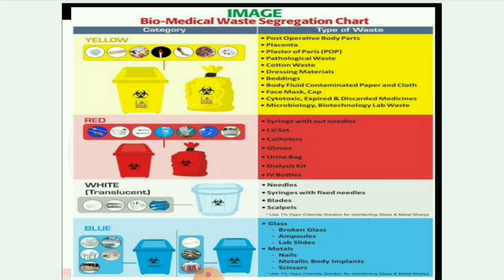Next image is the biomedical waste segregation chart with four categories: yellow, red, white, and blue. In the yellow category: post-operative body parts, placenta, plaster of Paris (POP), pathological waste, cotton waste, dressing materials, beddings, body fluids, contaminated paper and cloth, face mask, cap, cytotoxic waste, expired and discarded medicines, and microbiology/biotechnology lab waste.